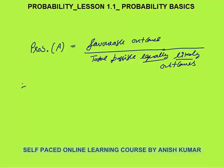Hello, this is probability lesson 1.1. In this I will discuss probability basics. The first definition is: what is the probability of event A? This is favorable outcomes divided by total possible equally likely outcomes. The word 'equally likely' is very important.